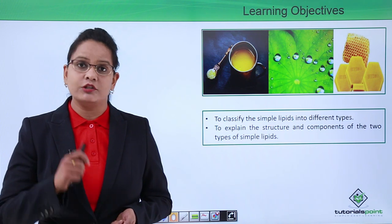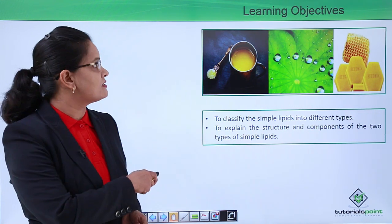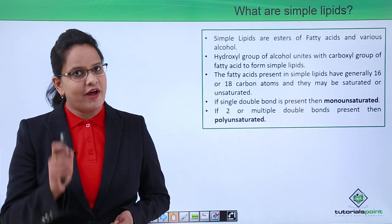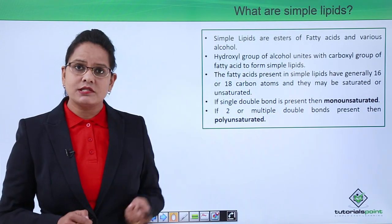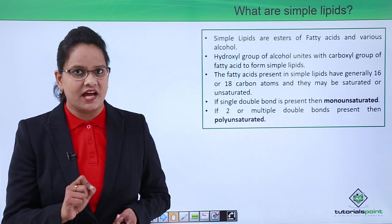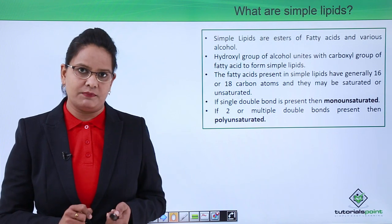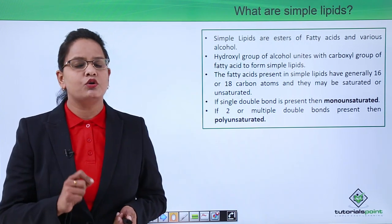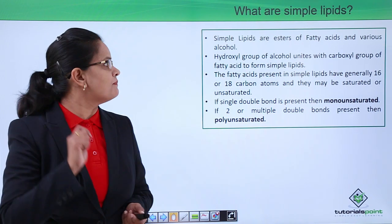So first, what are simple lipids? Simple lipids are the esters of fatty acid and various alcohols. The hydroxyl group of the alcohol part unites with the carboxyl group of the fatty acid. The hydroxyl group combines with the carboxyl group and ester bond is formed, and thus these types of lipids are simple lipids.